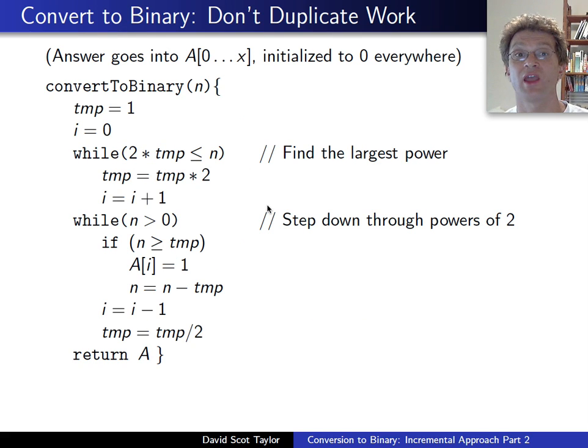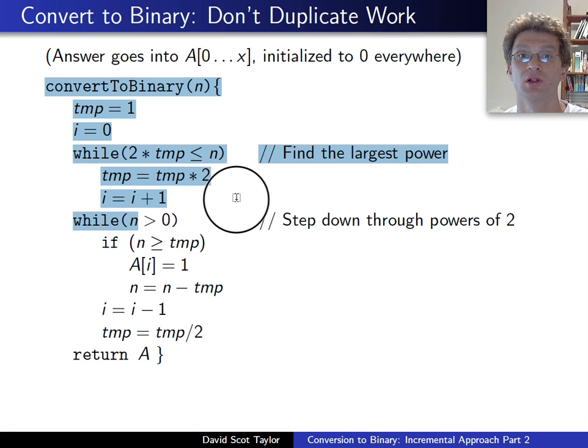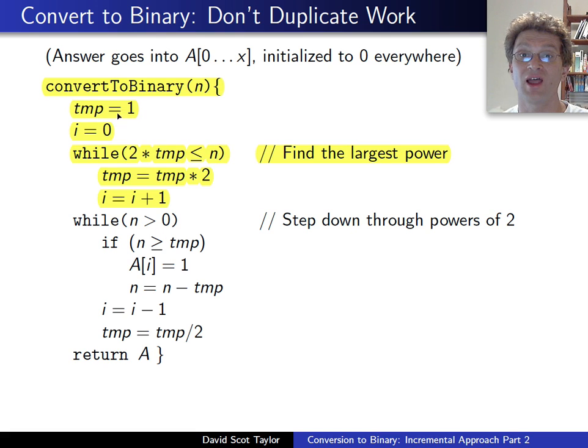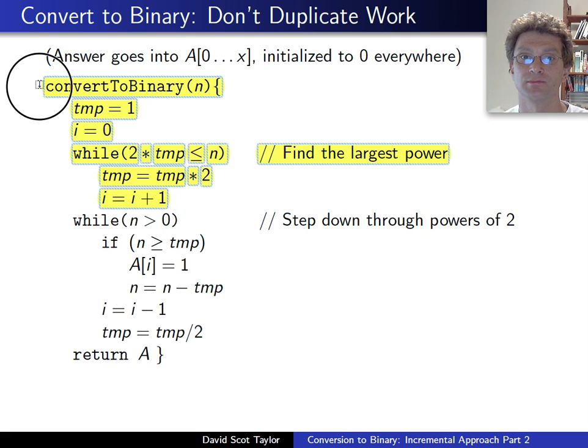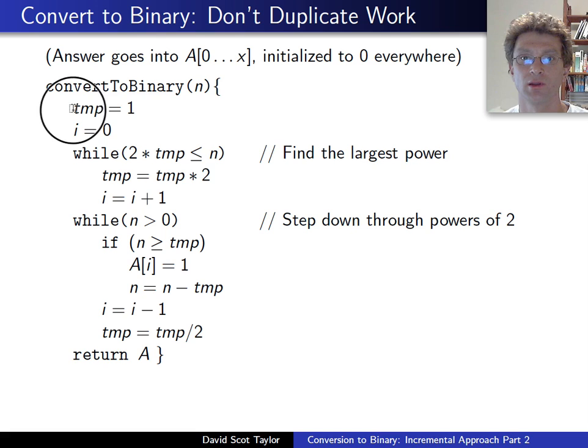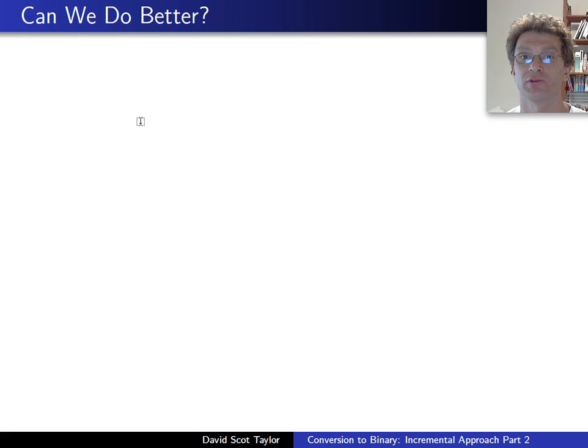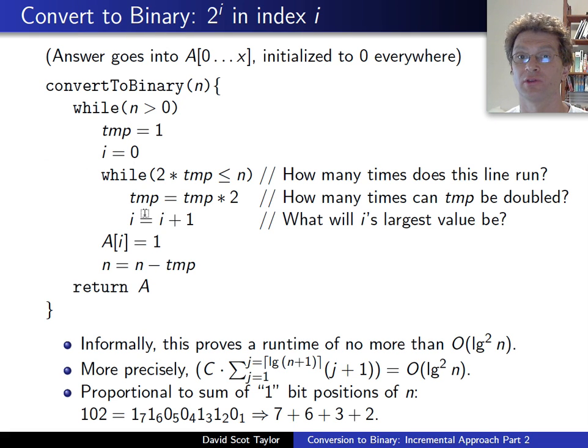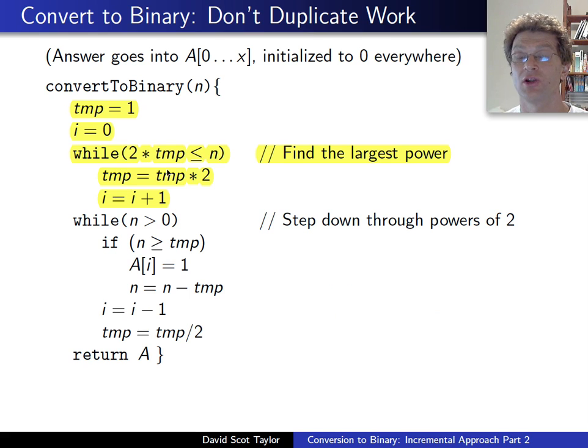So we can basically take our algorithm and just change it around a little bit. The first few lines of this algorithm represent the first lines of the outer loop and the inner loop of the original algorithm. But now, they're not nested. We're just finding the largest power of 2 less than or equal to our value n, once.